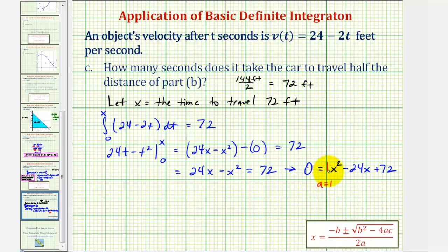where a = 1, b = -24, and c = 72. So we'd have x = -(-24), that's positive 24, plus or minus the square root of b², that's going to be (-24)² minus 4 times a, which is 1, times c, which is 72, divided by 2 times a, which is 2 times 1.